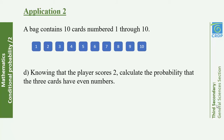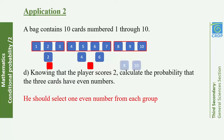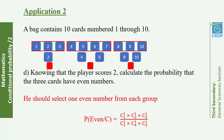Part D: Knowing that the player scores 2, calculate the probability that all three cards have even numbers. We already know scoring 2 means one card from each group. Even numbers: in {1,2,3} the only even is 2 — C(1,1). In {4,5,6,7} the evens are 4 and 6 — C(1,2). In {8,9,10} the evens are 8 and 10 — C(1,2). So P(even | score 2) = C(1,1)×C(1,2)×C(1,2) / [C(1,3)×C(1,4)×C(1,3)].